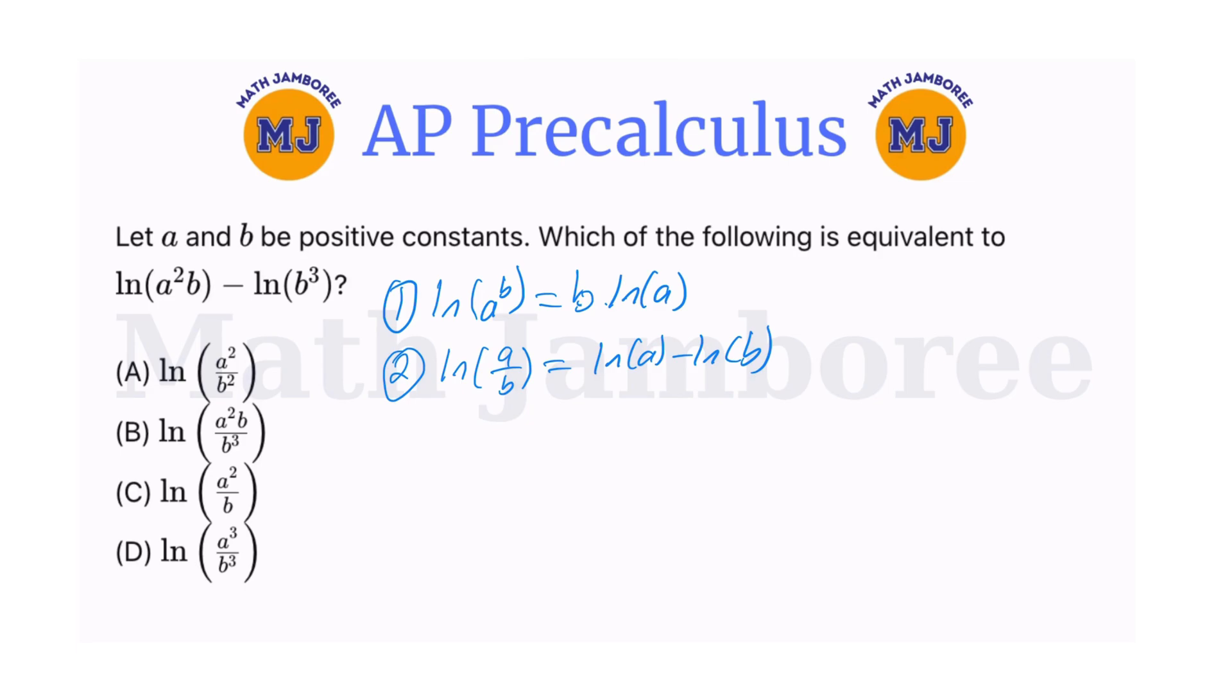With this in mind, by using the second property, we can rewrite our given expression. Natural logarithm of a squared b minus natural logarithm of b cubed can be written as natural logarithm of a squared b over b cubed.